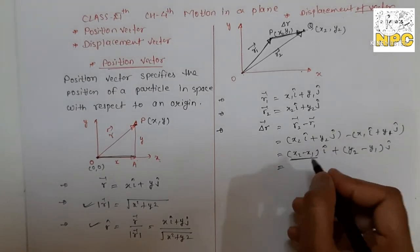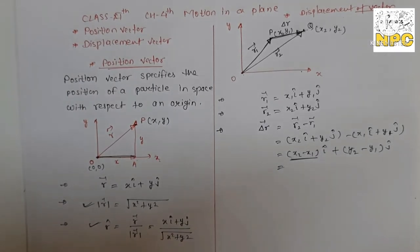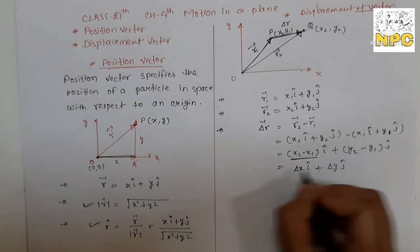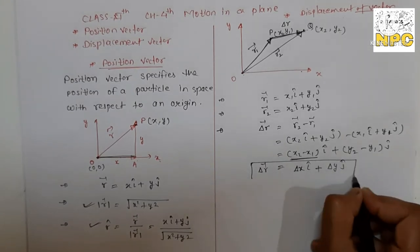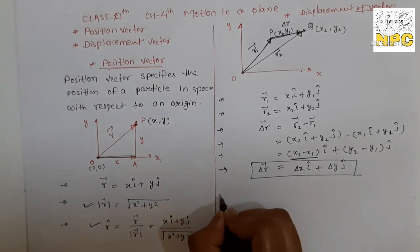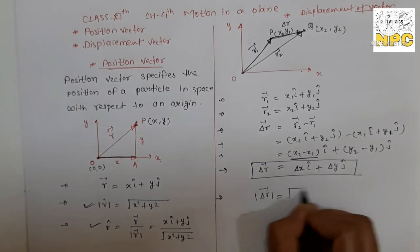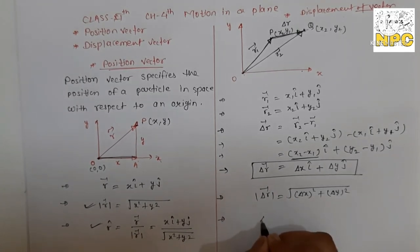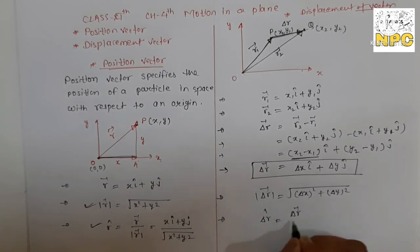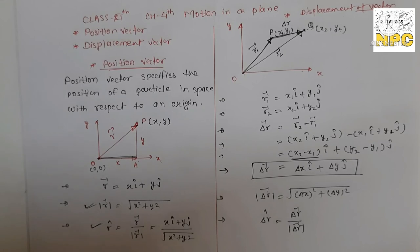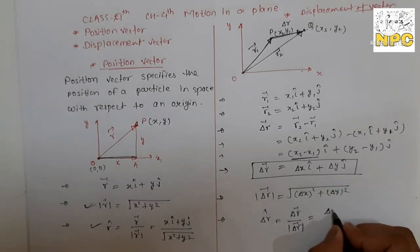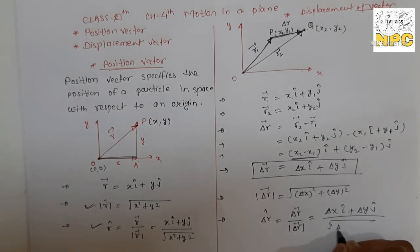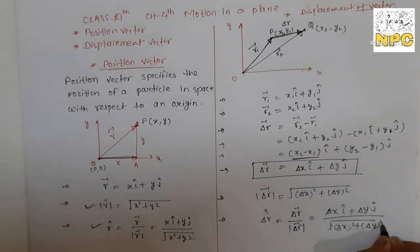So ΔR = ΔX·i-hat + ΔY·j-hat. This is your displacement vector. The magnitude of the displacement vector is: |ΔR| = √(ΔX² + ΔY²). For the direction, the unit vector is: ΔR-hat = ΔR vector / |ΔR| = (ΔX·i-hat + ΔY·j-hat) / √(ΔX² + ΔY²). These are simply your position vector and displacement vector formulas.